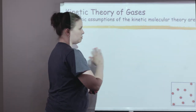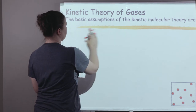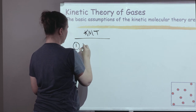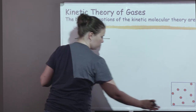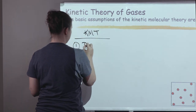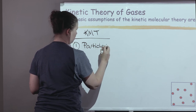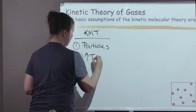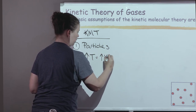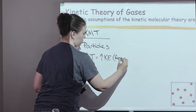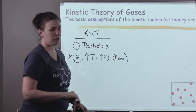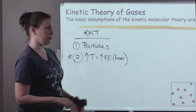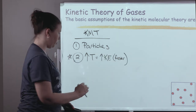Before we get into the specific inferences for gases, let's recap the three main postulates for KMT. The first postulate said that all matter behaves like particles. The second postulate says that if I increase the temperature of a gas, that means they're going to have more kinetic energy, and therefore move faster. That was really important with phase changes, showing that the particles would move faster, causing different spacing, and therefore be either solid, liquid, or gas.